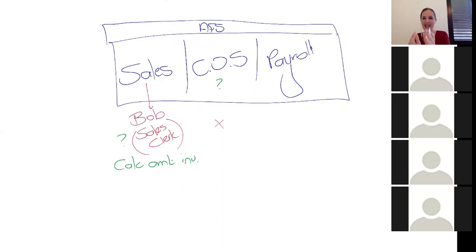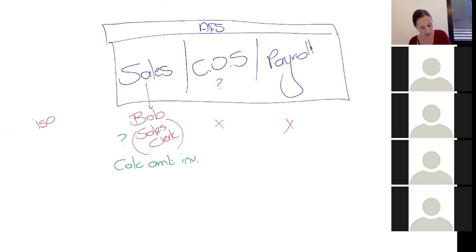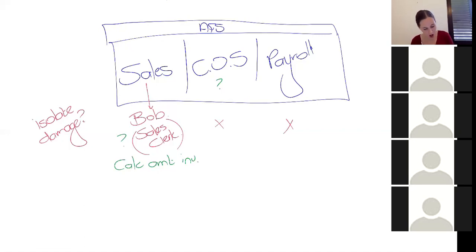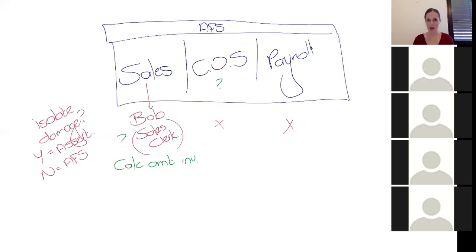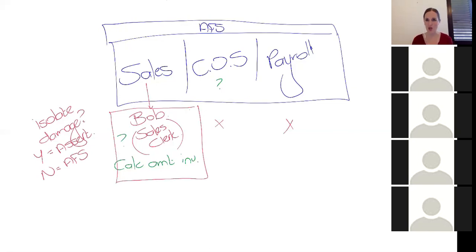Then we go to payroll: does Bob have any impact there? No, because he's got nothing to do with it. The simple way to think about it is: can you isolate the damage this thing is likely to cause? If the answer is yes, then this is an assertion or account balance level risk. If the answer is no, you can't isolate it, then that is a financial statement level risk. If you can box it — switch the warning light on for sales but switch it off for cost of sales and payroll — that is an assertion level risk.